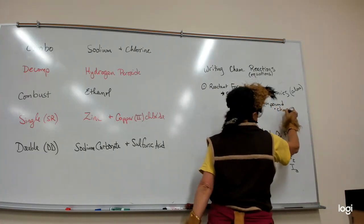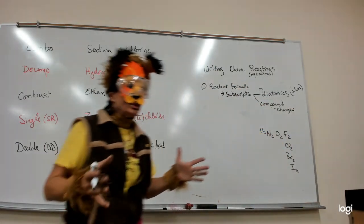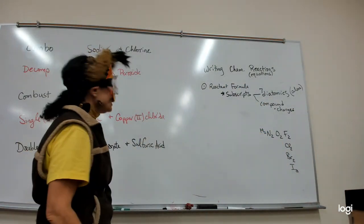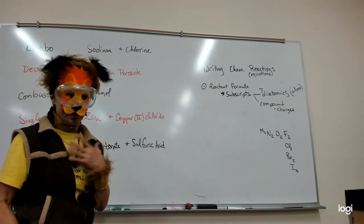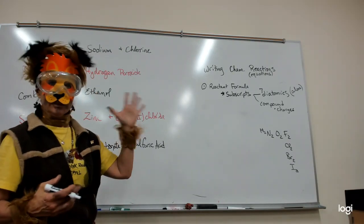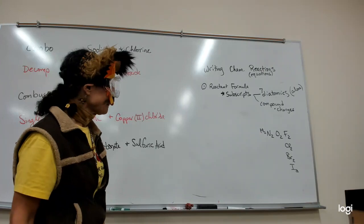Now there is an exception to that, which is two nonmetals. So if two nonmetals combine, I will give you the formula like boron trichloride. So I would tell you it's boron with three chlorides.